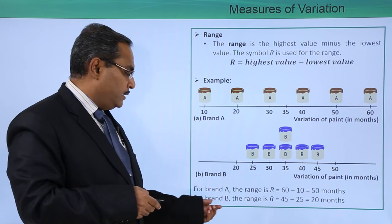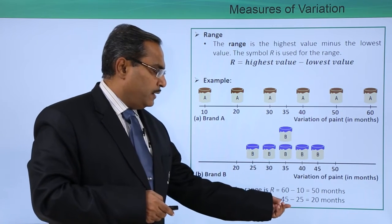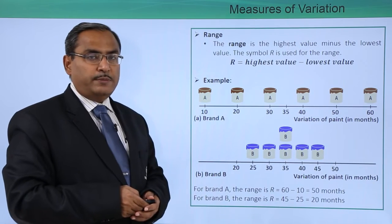But in case of brand B, the range is 45 minus 25, that is 20 months only.